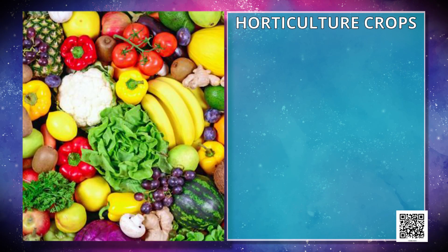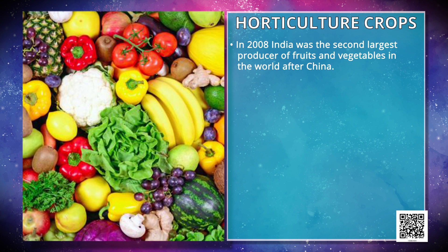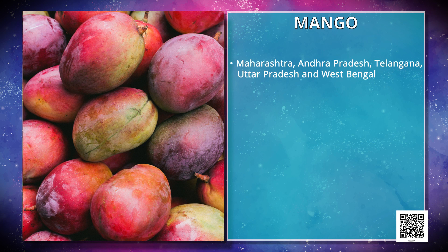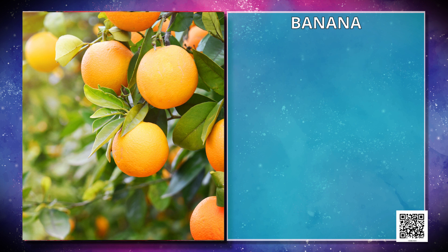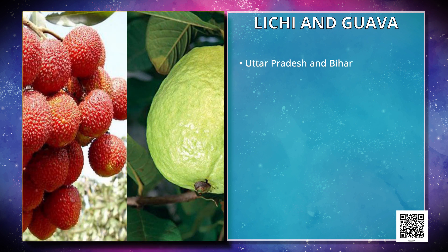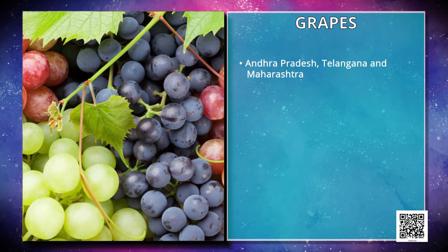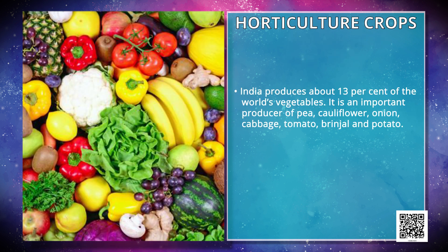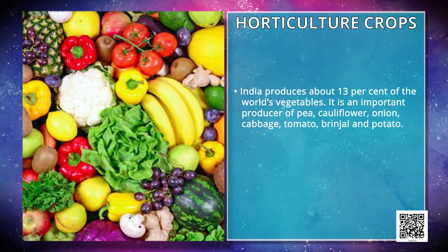Now let's talk about horticulture crops. In 2008, India was the second largest producer of fruits and vegetables in the world after China. India is a producer of tropical as well as temperate fruits. Mangoes of Maharashtra, Andhra Pradesh, Telangana, Uttar Pradesh and West Bengal; oranges of Nagpur and Cherrapunji; bananas of Kerala, Mizoram, Maharashtra and Tamil Nadu; litchi and guava of Uttar Pradesh and Bihar; pineapples of Meghalaya; grapes of Andhra Pradesh, Telangana and Maharashtra; apples, pears, apricots and walnuts of Jammu and Kashmir and Himachal Pradesh are in great demand the world over. India produces about 13% of the world's vegetables and is an important producer of peas, cauliflower, onion, cabbage, tomato, brinjal and potato.